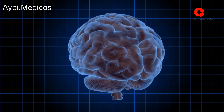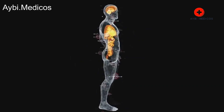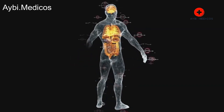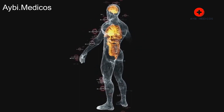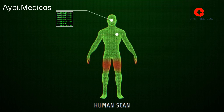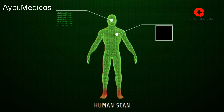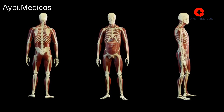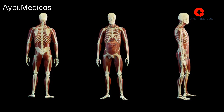Cognitive changes include memory problems, difficulty concentrating, and changes in cognitive abilities. Motor and sensory changes include weakness, numbness, or tingling in the limbs, and difficulty with balance and coordination. Vision problems include blurred or double vision, loss of peripheral vision, or other visual disturbances.